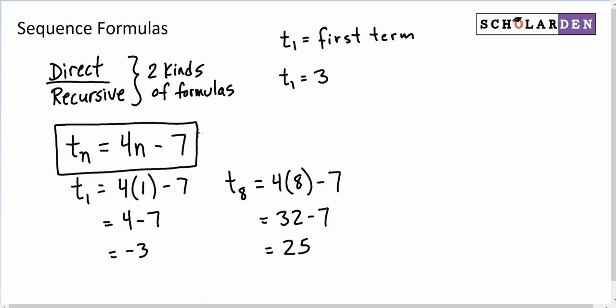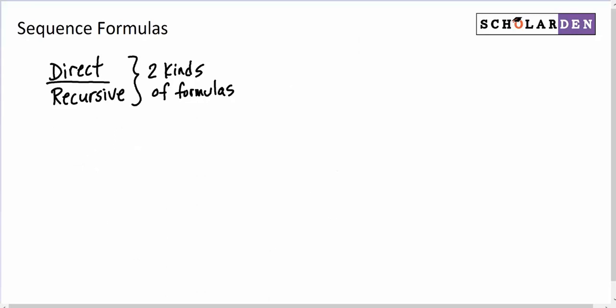Recursive formulas are a little different. A recursive formula requires the term before it as its input. Not the term number, but the term before it. So for instance, say we wanted every term to be 2 times the previous term minus 4.